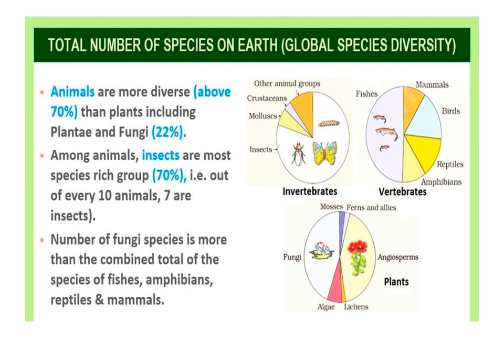More than 70% of all species recorded are animals, while plants including algae, fungi, bryophytes, gymnosperms, and angiosperms account for about 22%. Among animals, more than 70% are insects — that is, out of every 10 animals, 7 are insects. The number of fungi species is more than the combined total of species of fish, amphibians, reptiles, and mammals. Animals are more diverse than plants, including Plantae and fungi.